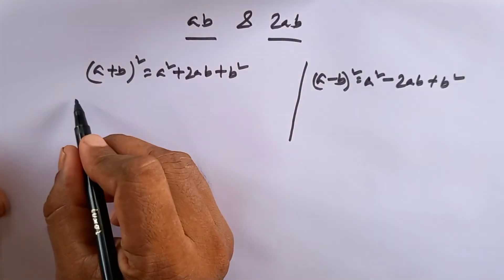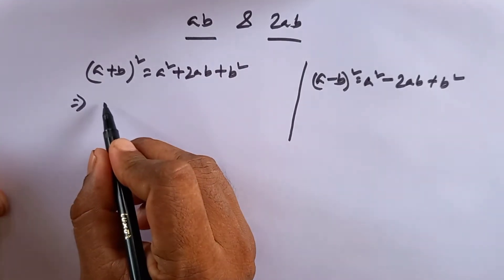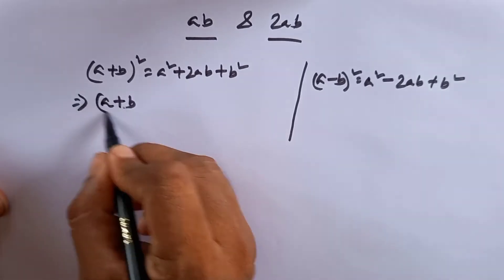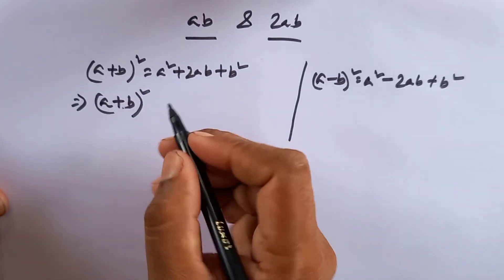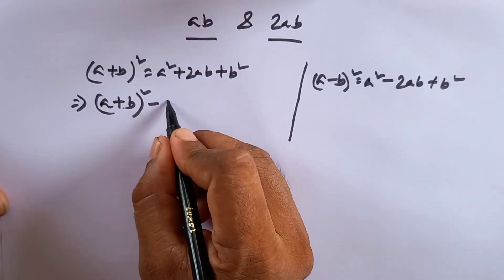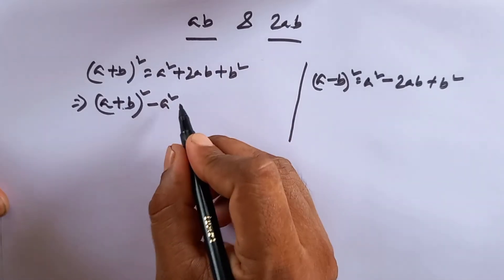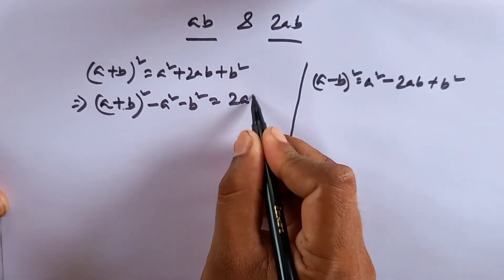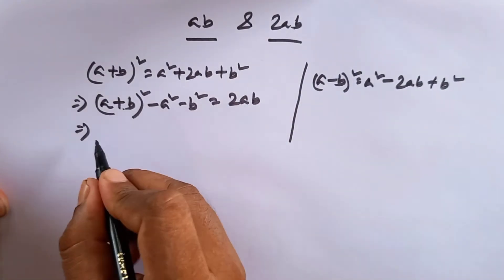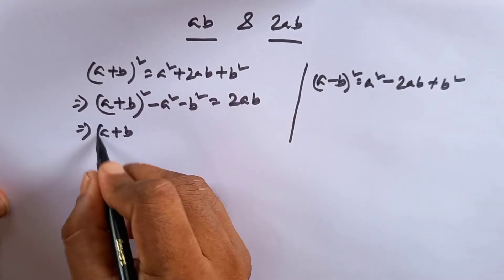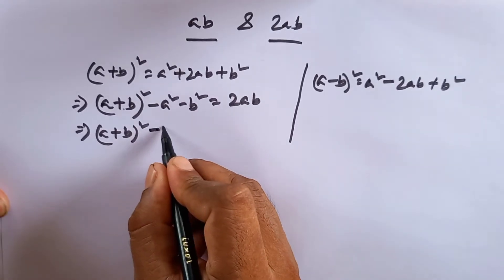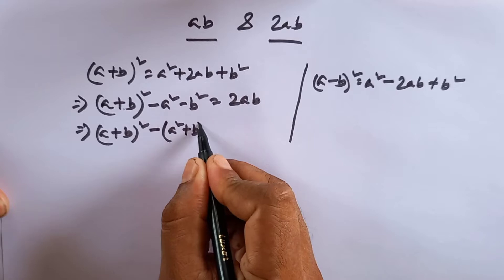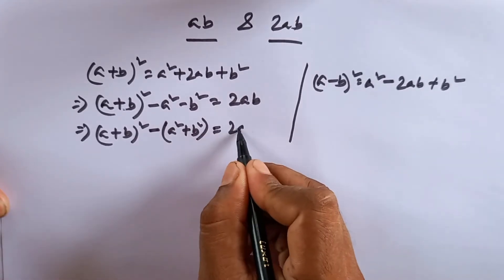So now, from A plus B whole square, we remove A squared and B squared to get 2AB. So, A plus B whole square minus A squared minus B squared equals 2AB.